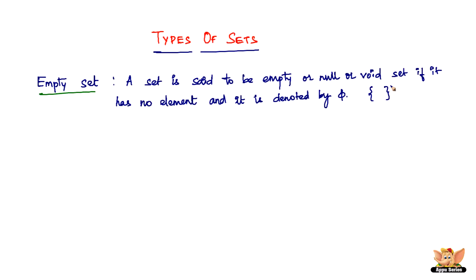So let's look into another type of a set. Here is another kind of a set which is called as a singleton set. What is it? A set consisting of a single element is called as a singleton set.